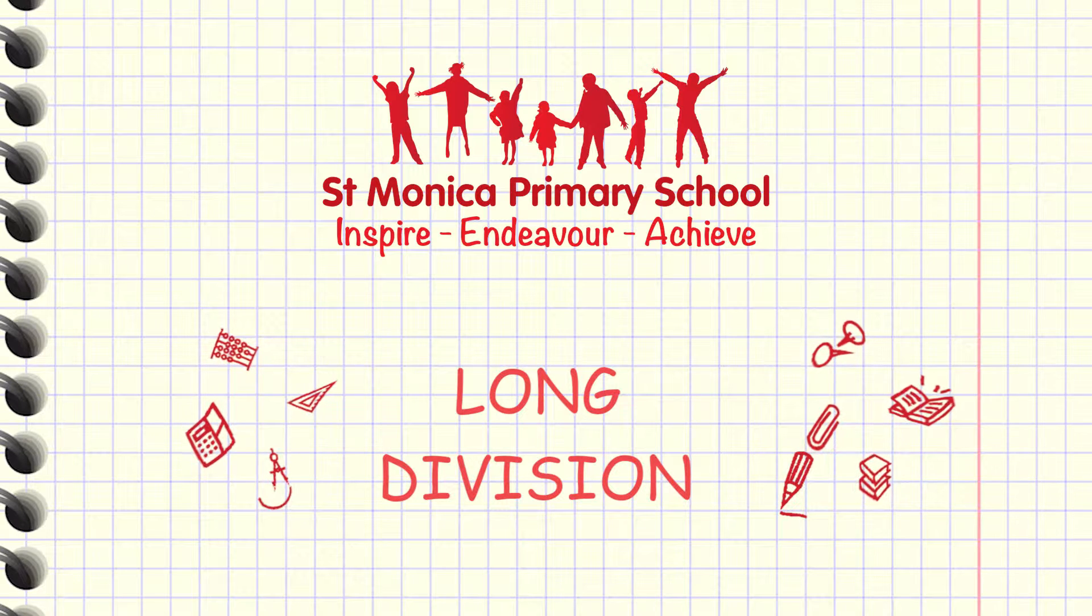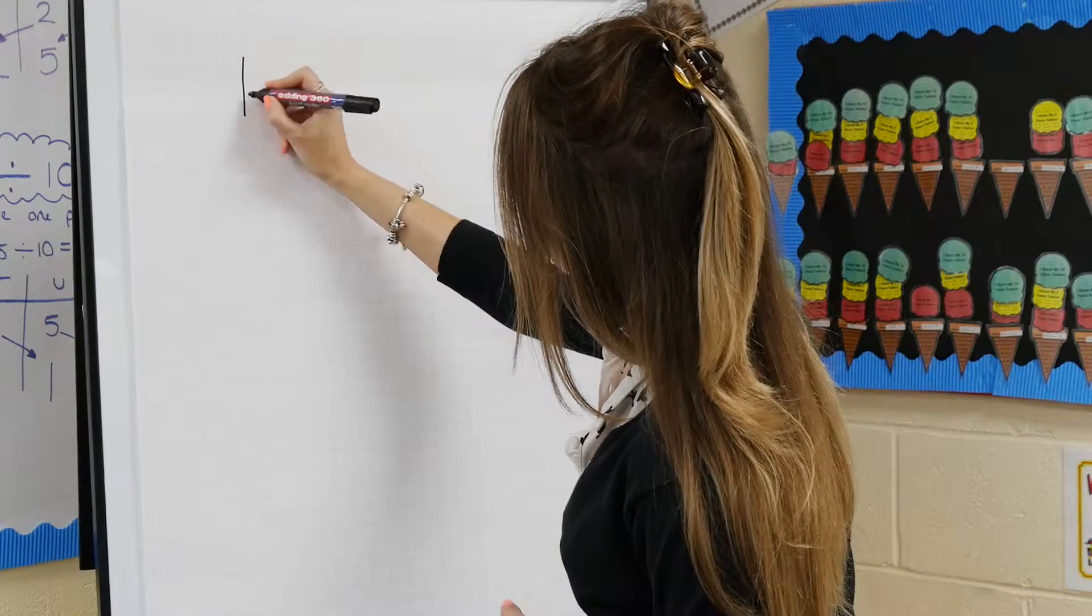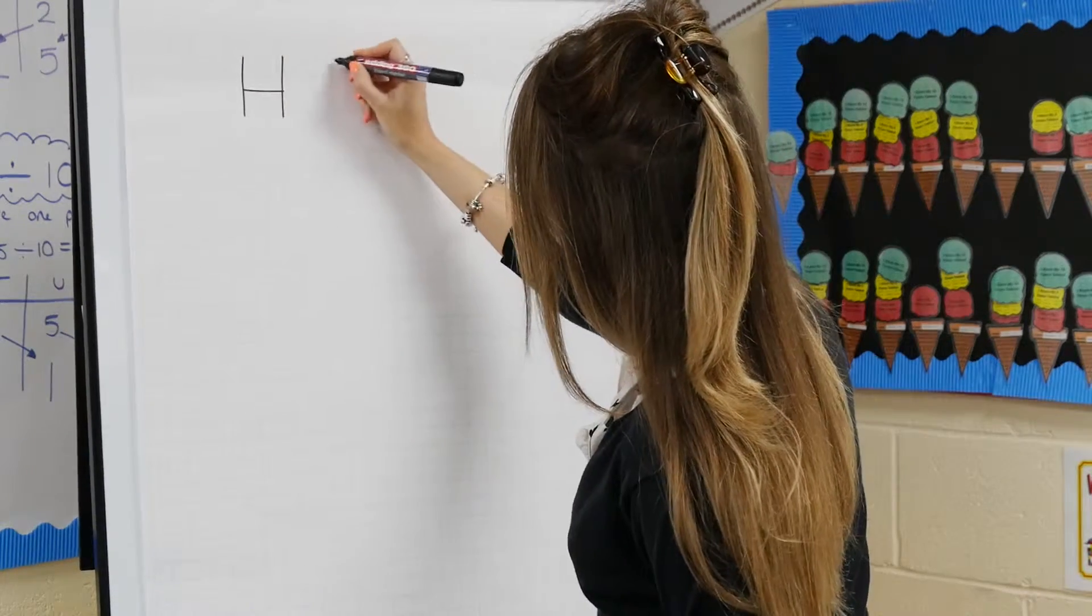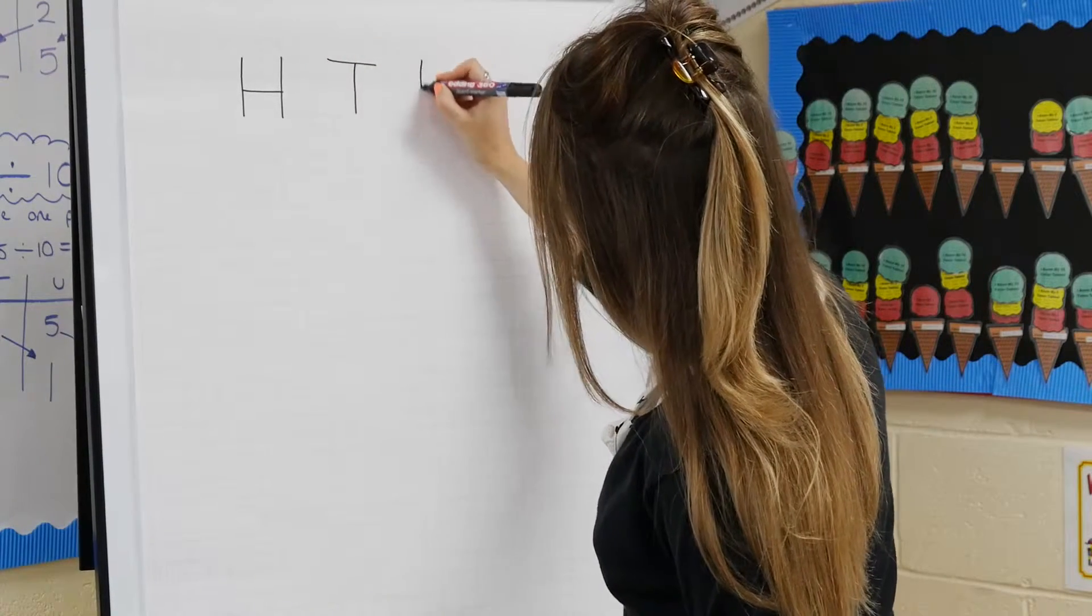This method can be used to divide a number by a two-digit number. To start, ensure you have written the heading for each column: hundreds with a capital H, tens with a capital T, and units with a capital U.